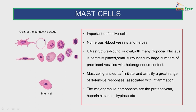The mast cells are important defensive cells found numerous around blood vessels and nerves. Ultrastructurally, they are round or oval with many filopodia. The nucleus is centrally placed and small, surrounded by large numbers of prominent vesicles with heterogeneous content. The mast cell granules can initiate and amplify a great range of defensive responses associated with inflammation. The major granule components are the proteoglycan heparin, histamine, tryptase, etc.